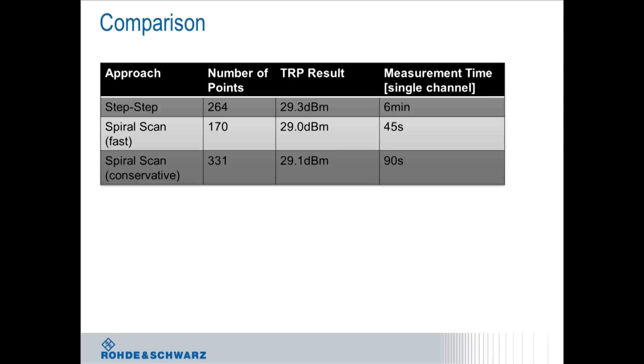So in the second row right here, the spiral scan, what I consider fast, didn't take as many number of points on the 3D sphere, roughly 170, so less than 264. But look at the correlation, 29.0 dBm, which is awfully close to 29.3, so it's totally within the measurement uncertainty, and its measurement took 45 seconds.